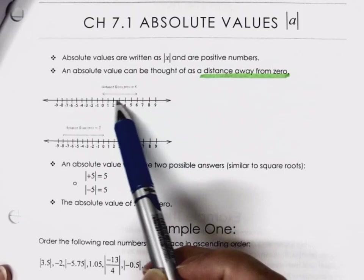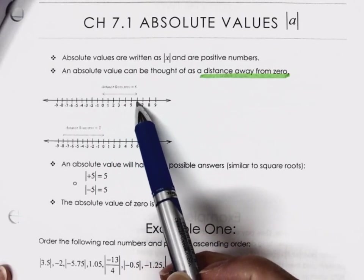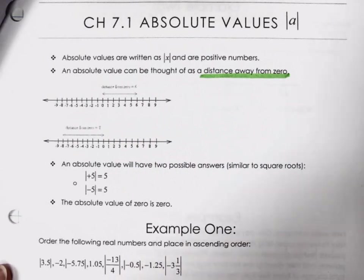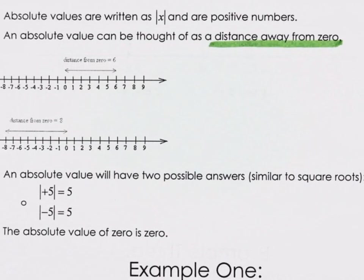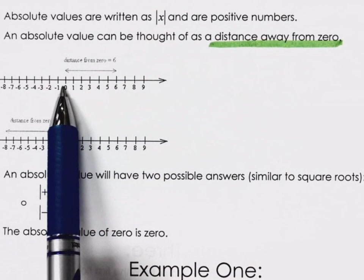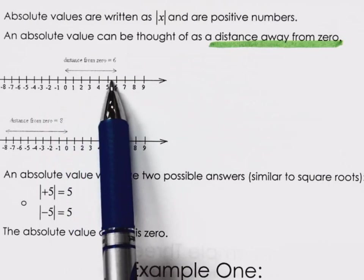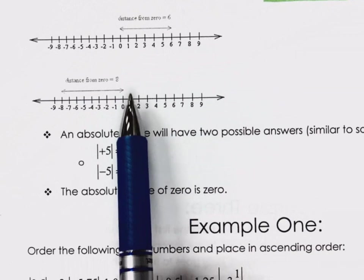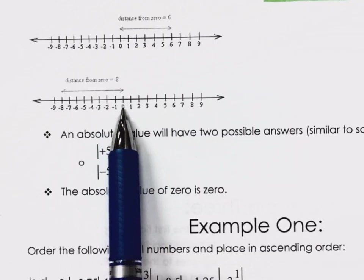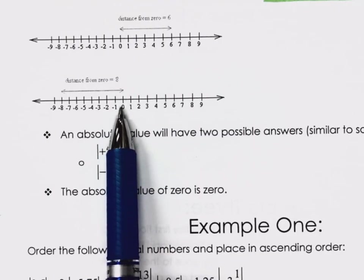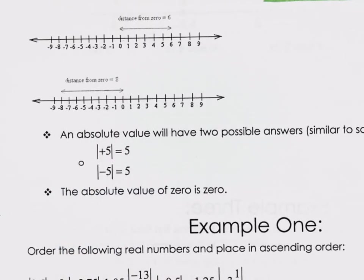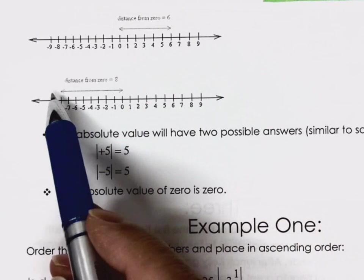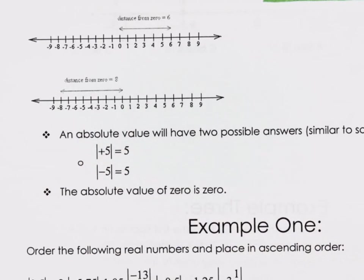If we're looking at positive six on a number line, going from zero to six in the positive direction, we know that's a distance of six. But if we're looking in the negative direction, we're eight units away from zero — it doesn't matter what direction. The distance away from zero is eight units. We could say eight units to the left, but absolute values get rid of direction.